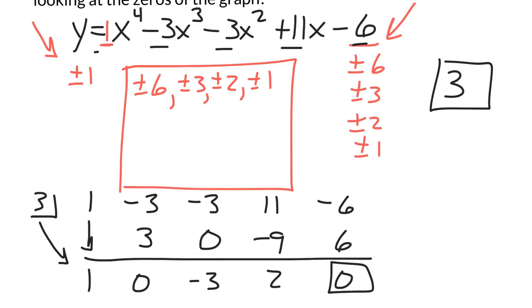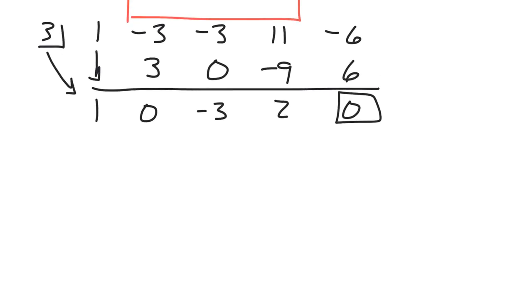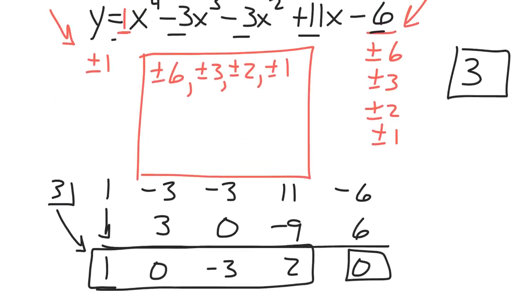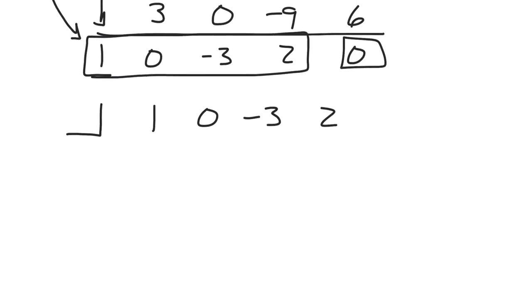And we aren't quite far enough down to have it into a quadratic equation. So what we need to do now is keep going with what our remainder was here now that we found one of our zeros. So 1, 0, negative 3, and 2. And now we're going to go back up and get another one of our zeros, potential zeros, which was actually, I'm going to say negative 2.